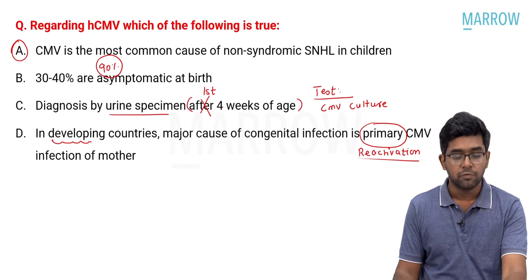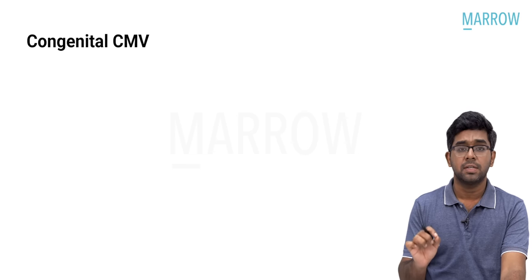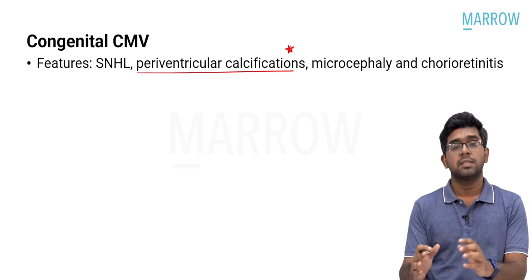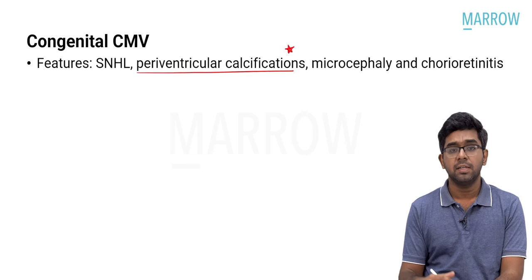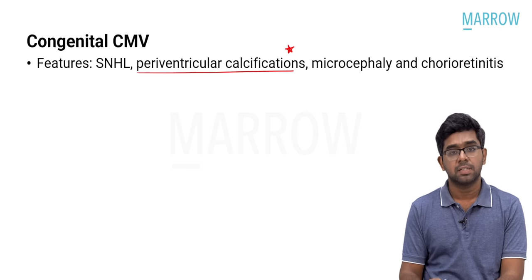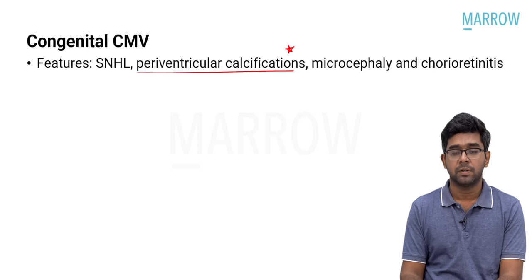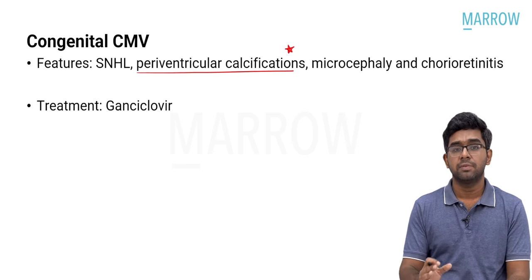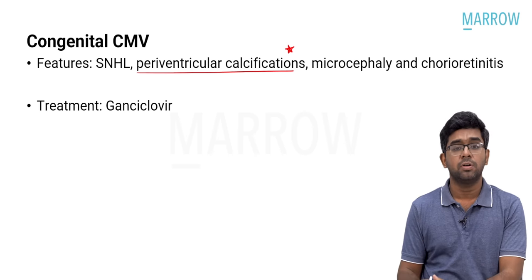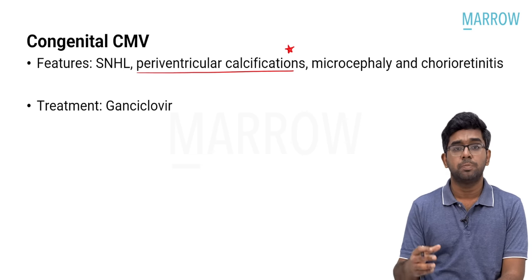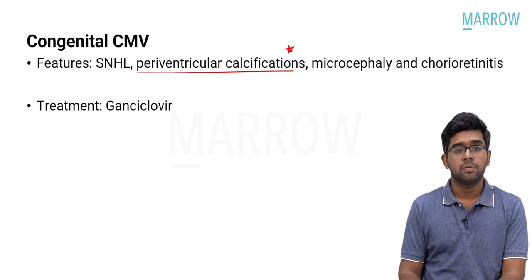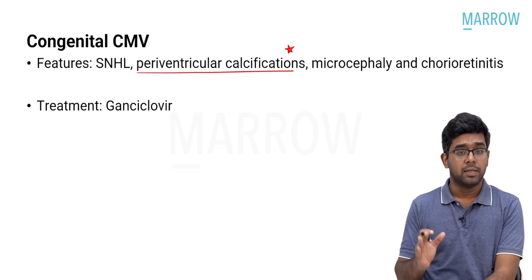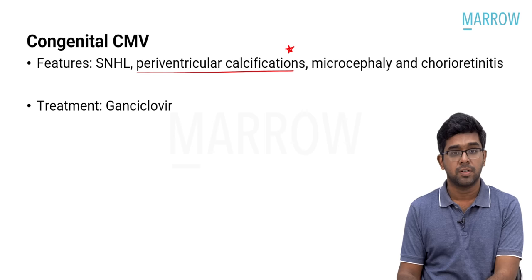The treatment option for congenital CMV is Ganciclovir — the drug of choice. Treatment will not reverse brain manifestations, but the primary aim is to prevent progression of chorioretinitis. It is very important that you go through the entire topic of TORCH infection, as questions are going to be asked in future exams.